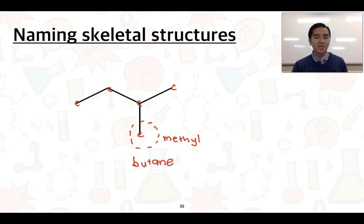We also need to number the carbons so that this group or these groups have the lowest number. So you might realize that I would need to number from right to left. So this tells me that this methyl group is on carbon-2, and so the name is 2-methylbutane.